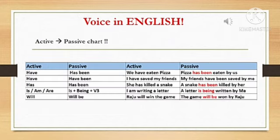Now we can see more. We can see present perfect tense. The active word is have — by passive conversion the word used is has been. For example: We have eaten pizza. By passive conversion: Pizza has been eaten by us.